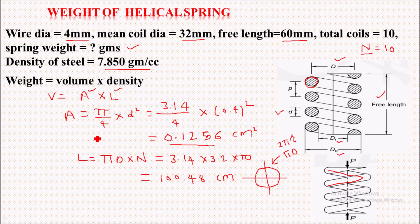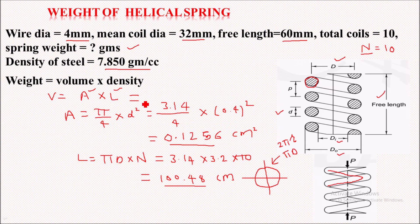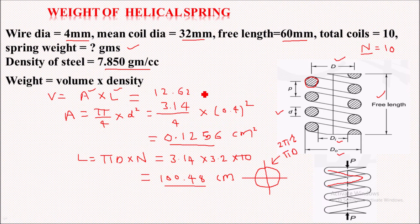Now we have calculated the area, that is 0.1256, and we have calculated the length. We will multiply area by length to get the volume, which will be 12.62 centimeter cubed. That is the volume of this spring.